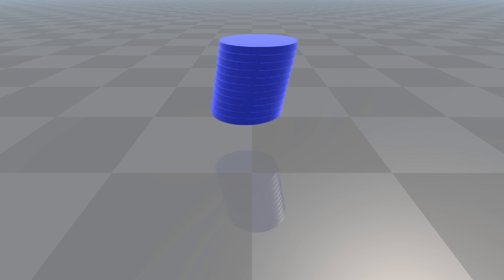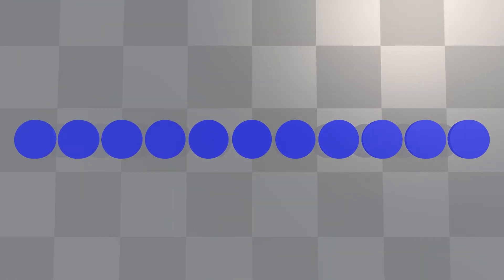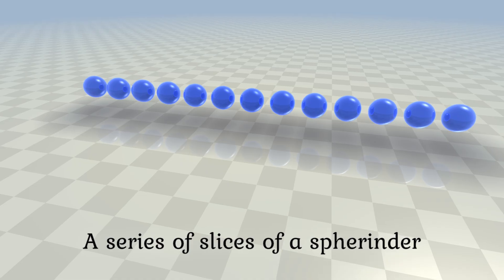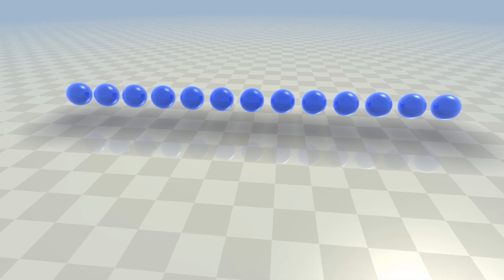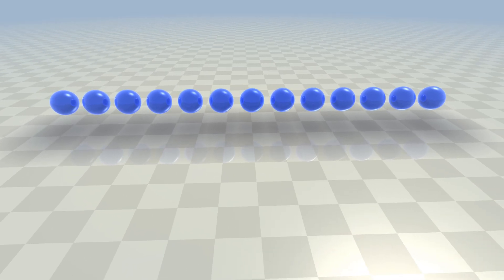Here are the two-dimensional slices of a three-dimensional ball, these are the slices of a cylinder, and here are the slices of a spherinder — a four-dimensional cylinder. You can imagine a four-dimensional space as different three-dimensional worlds existing in parallel to each other, with four-dimensional objects spanning across those worlds. Each slice of such a shape would be a cross-section with a particular world.